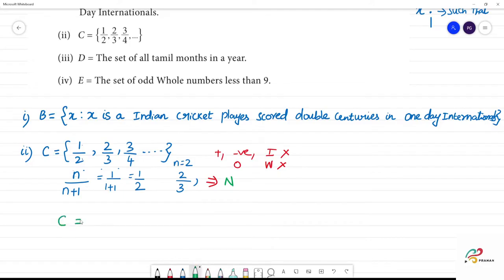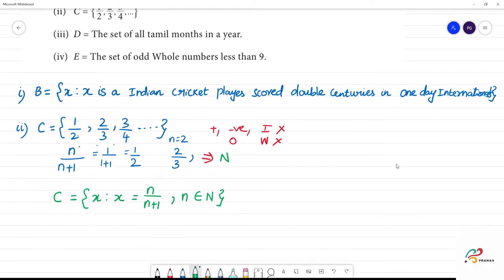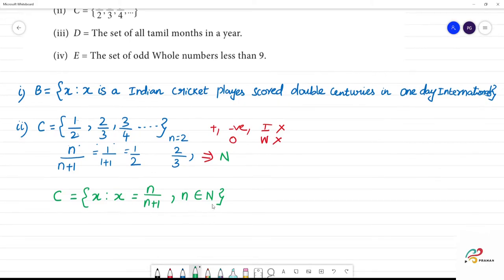C is equal to x such that x is equal to n by n plus 1, n belongs to natural number. N is a natural number. The natural number starts with 1, 2, 3.